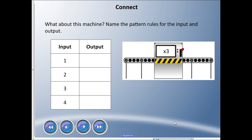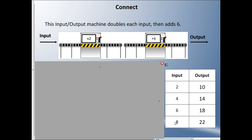Pause and complete the table, then name the pattern rules. This machine multiplies the input by three to get the output. If I input one, one times three gives an output of three. Input two: two times three is six. Input three: three times three is nine. Input four: four times three is twelve. The pattern rule for the input is start at one, add one each time. The pattern rule for the output is start at three, add three each time.